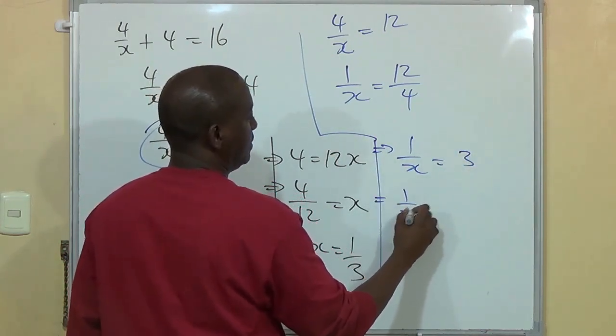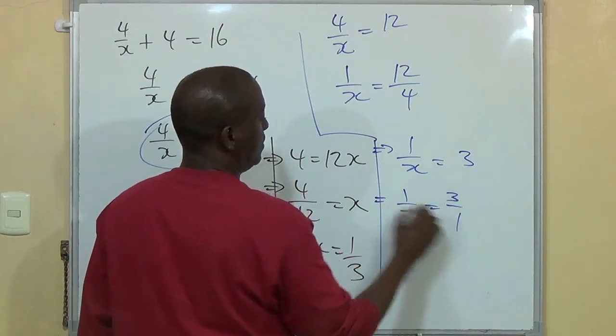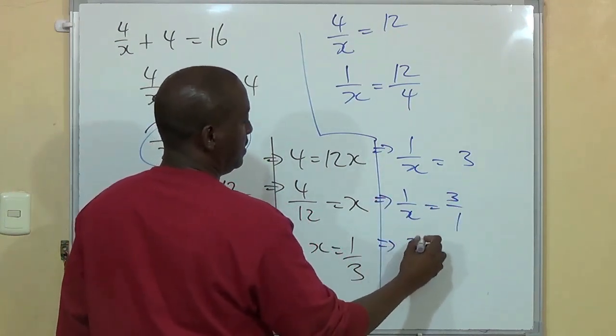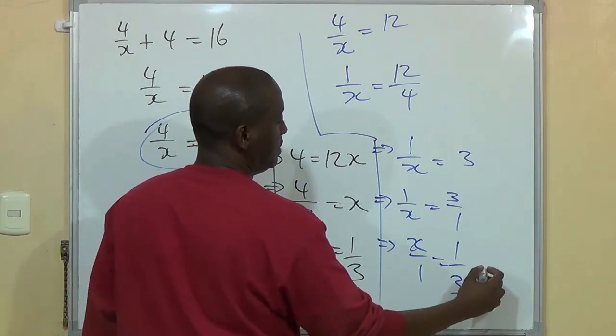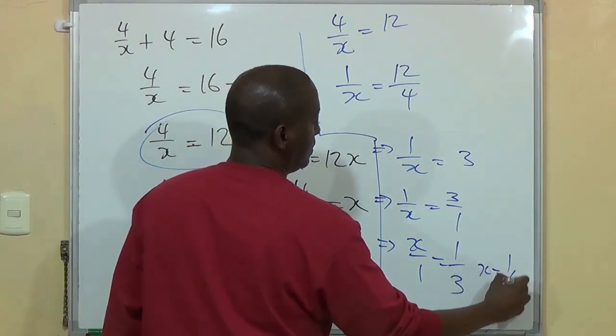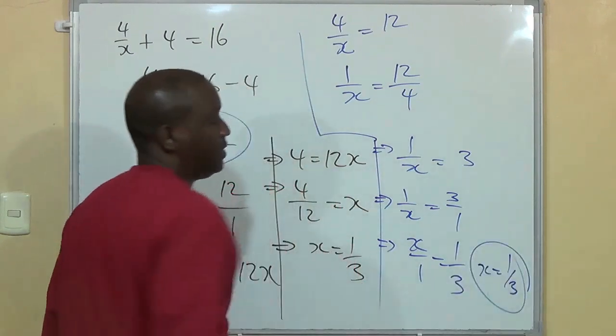And if 1 over x is equal to 3 over 1, then naturally x over 1 is equal to 1 over 3. So in other words, x is equal to one third. So you get the same answer.